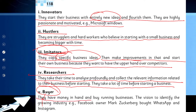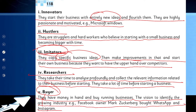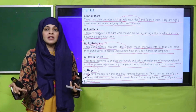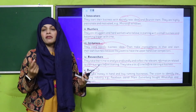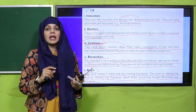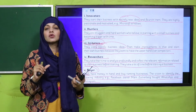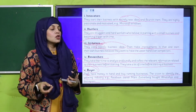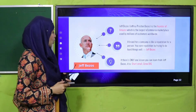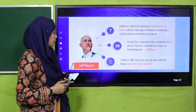Then come the buyers. What kind of entrepreneurs are buyers? They have money in hand and buy a running business with the vision to identify the growing industry. For example, Facebook owner Mark Zuckerberg bought WhatsApp and Instagram. Buyers are the type of entrepreneurs who buy existing businesses in the market — they have money, and then they bring different innovations into those businesses. The best example is that Facebook's owner Mark Zuckerberg bought WhatsApp and Instagram.